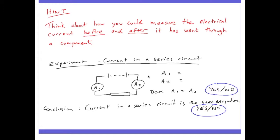How does the current in a series circuit behave? The current is the same everywhere.